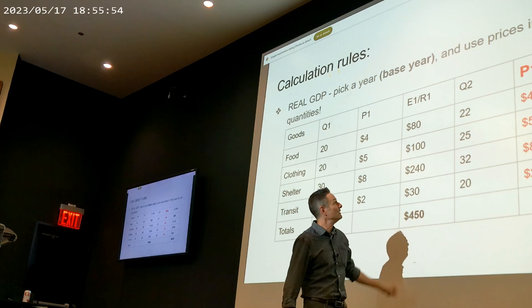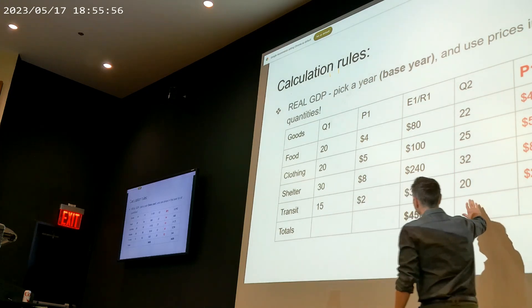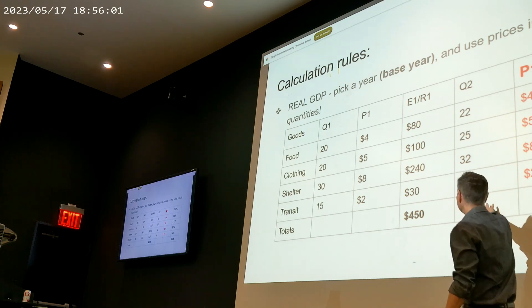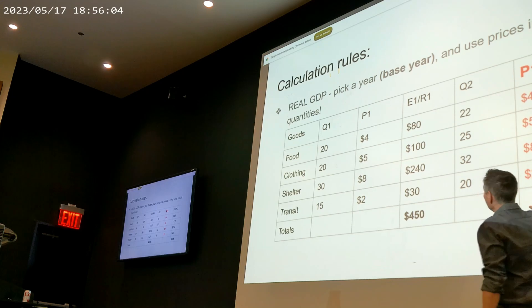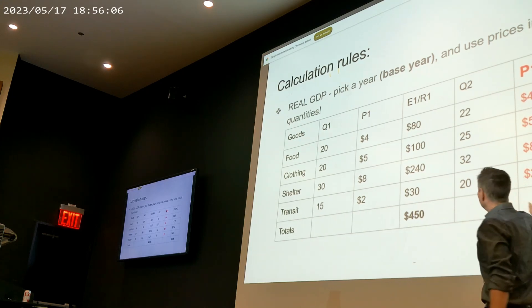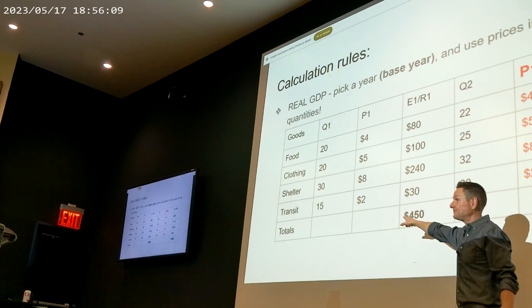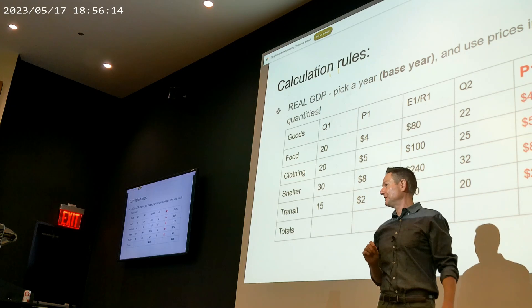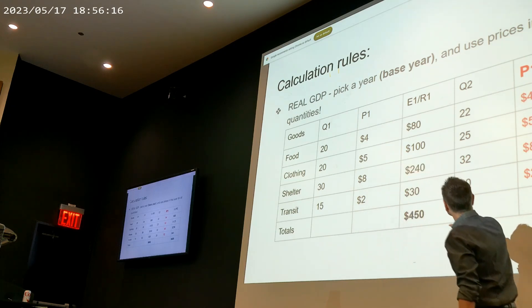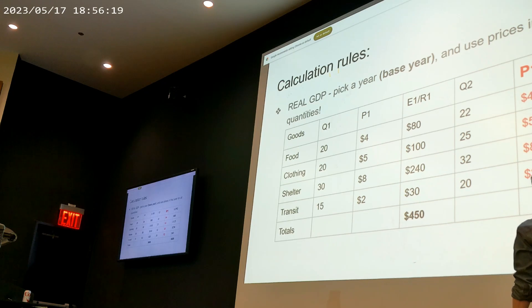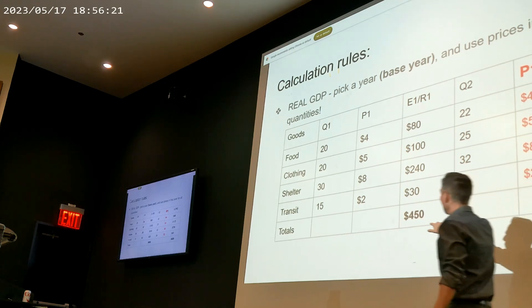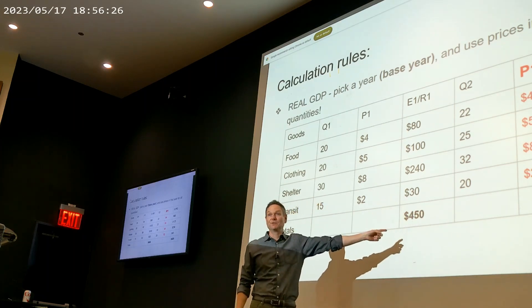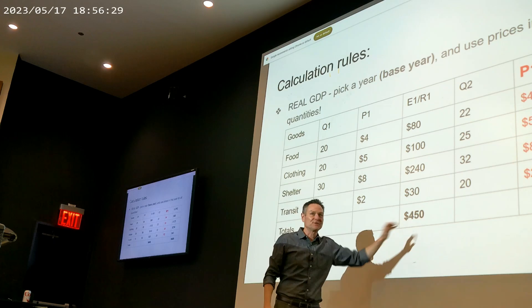Next year, we can do a little bit more of everything — technological progress or improving business know-how. But instead of letting the prices go up, we use our old prices again — prices from the base year, as it's called. So we compute Q2 times P1, which gives us expenditures in year two using base-year prices. Now we have a more comparable measure of how much more we can do in year two than in year one: 509 versus 450.